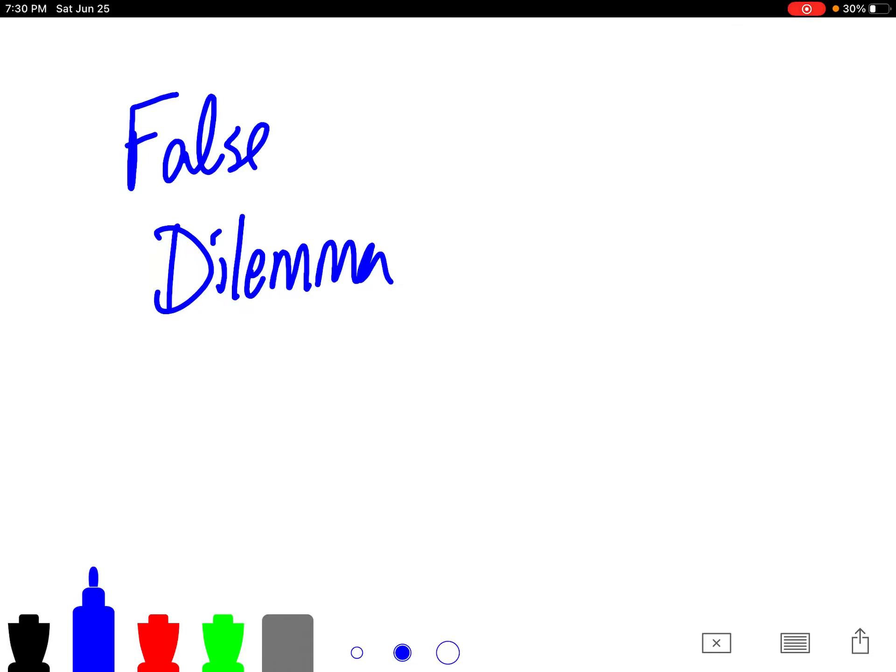The next fallacy we'll discuss is referred to as a false dilemma, sometimes called a false choice, and a lot of fallacies that we'll be discussing are good at fooling us because they actually look a lot like a good argument.